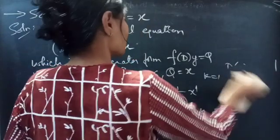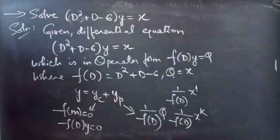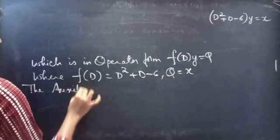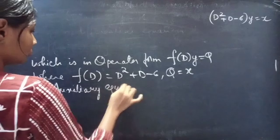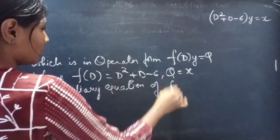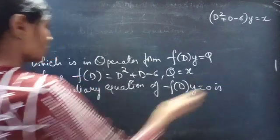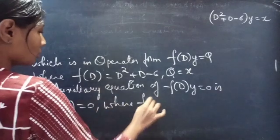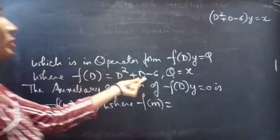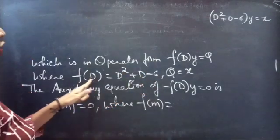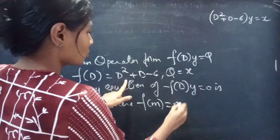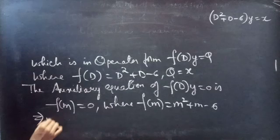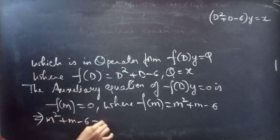Now let's find yc using the auxiliary equation. The auxiliary equation of f(D)·y = 0 is f(m) = 0, where f(m) corresponds to f(D) = D² + D − 6. We replace the differential operator D by m, so f(m) = m² + m − 6. Our auxiliary equation becomes m² + m − 6 = 0.